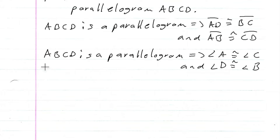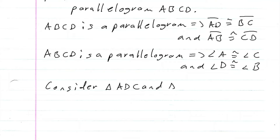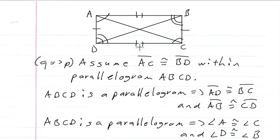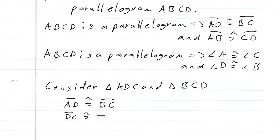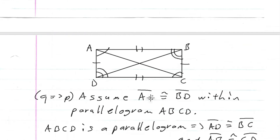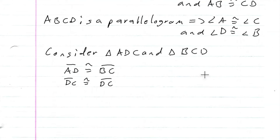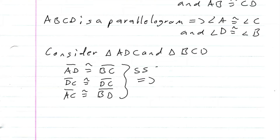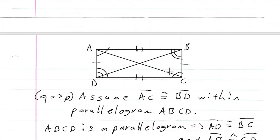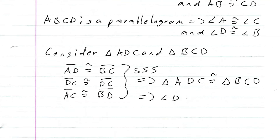So let's go ahead and get started on it. Let's go ahead and consider triangle ADC and triangle BCD. We know that AD is congruent to BC. We know DC is congruent to DC. And from our assumption, we know that AC is congruent to BD. These three things imply by the side-side-side congruency postulate that triangle ADC is congruent to triangle BCD. And of course, if these two triangles are congruent, that means angle D is congruent to angle C.